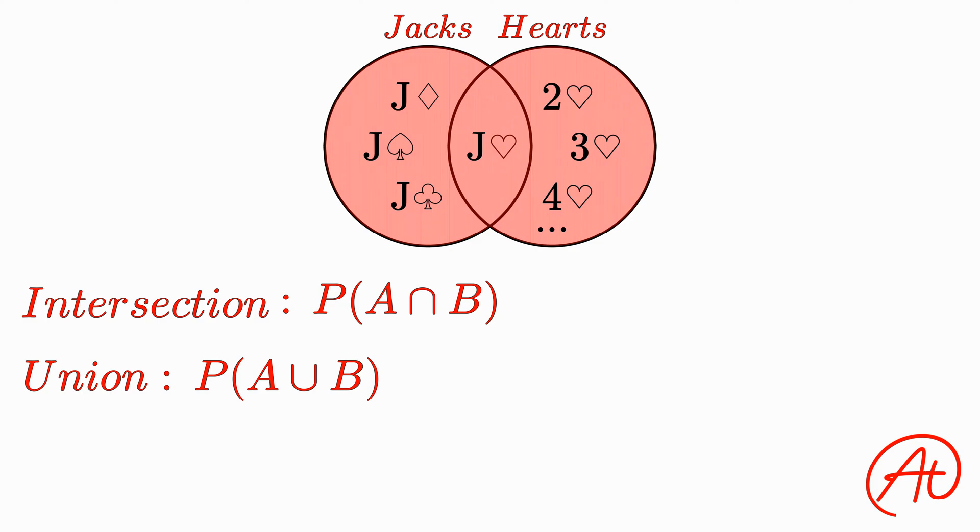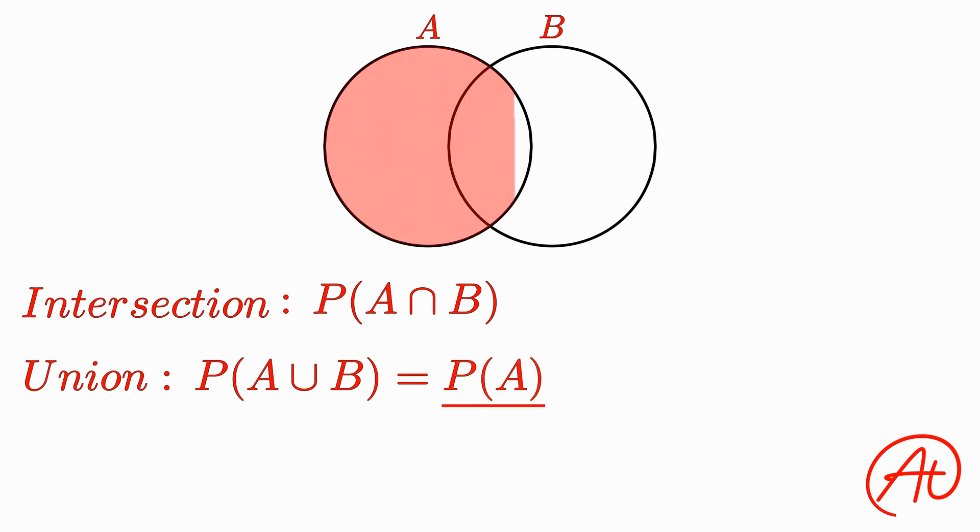Okay, but how do we calculate this value? Well, one way would be to take the entire probability of picking a jack, and add to it the entire probability of picking a heart, but if we do that, we would count the middle twice, so we need to subtract out one of the intersections of A and B. And that's the union formula.